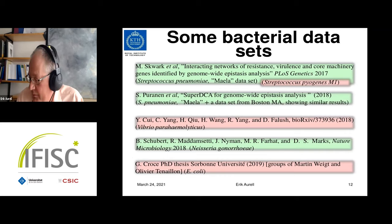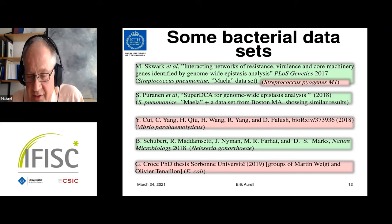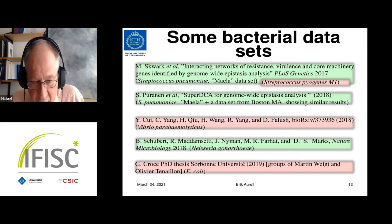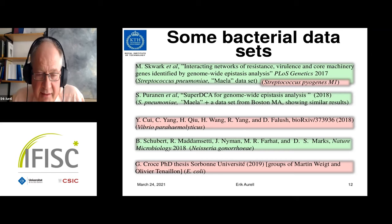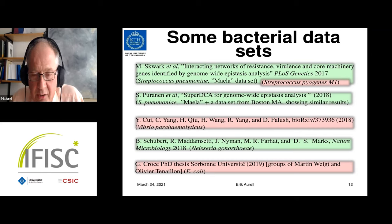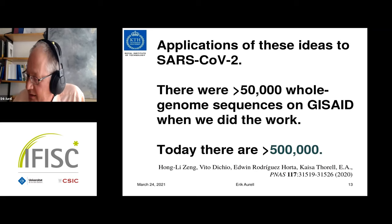We and others have looked at this on the level of whole genomes in bacteria. The latest work was not very optimistic for E. coli, which happens to have little recombination — from a PhD thesis from the group of Martin Weigt. For bacteria known to have a lot of recombination, the results seemed to work — those are shown in green. For bacteria known to have little recombination, shown in red, it didn't work.